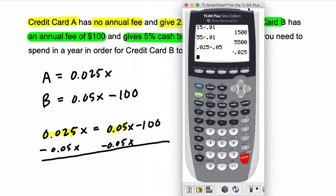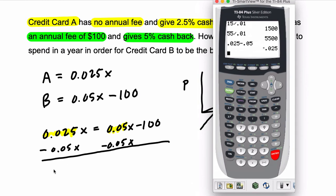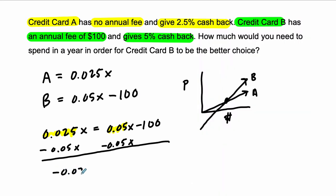And that's negative 0.025. And we have negative 0.025x equals negative 100, and then we divide both sides by negative 0.025.